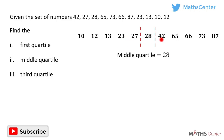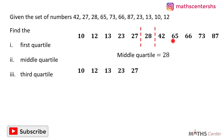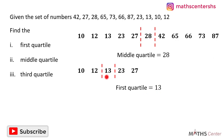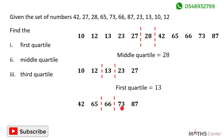The first part is 10, 12, 13, 23 and 27. The middle number of the first part gives us the first or lower quartile. We have 5 numbers, with 2 to the left and 2 to the right, so the middle number is 13. Therefore the first quartile is 13. The second part is 42, 65, 66, 73, 87 — 5 numbers. The middle number there is 66, so the third quartile is 66.